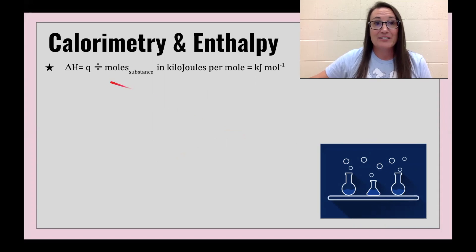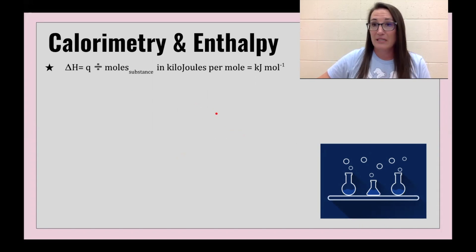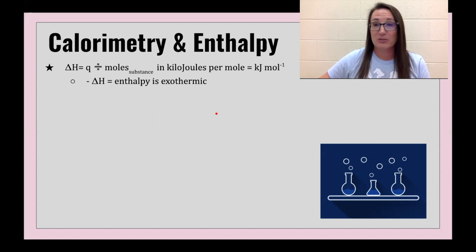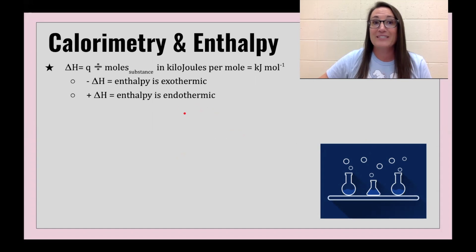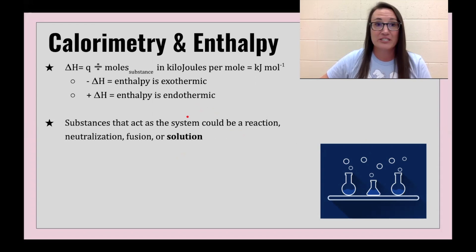Take your heat and divide by the moles — that gives you kilojoules per one mole. Even though you didn't use one mole in your reaction, the result will be expressed per one mole. The enthalpy is exothermic if negative, and endothermic if positive for that reaction, solution, or neutralization.